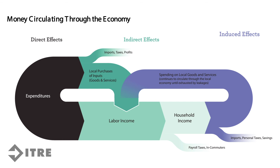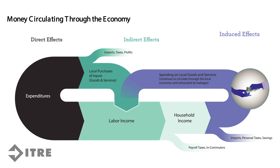Similarly, dollars can flow out of this cycle through imports, personal taxes, and savings. These induced effects will continue to cycle through the economy in the form of dollars changing hands from an individual to a business and back again, until the leakages from taxes, imports, and savings exhaust the available money.